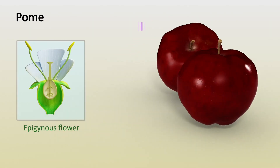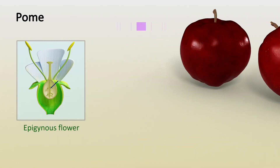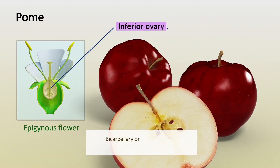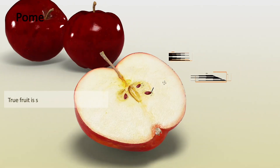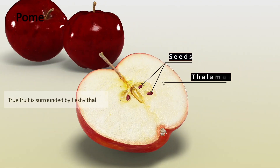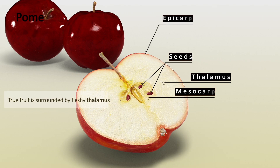Pome: Pome develops from a bicarpellary or multicarpillary, syncarpous, inferior ovary with axial placentation. Pome is a true fruit and is surrounded by fleshy thalamus. In Pome, the epicarp and mesocarp are fleshy and are fused with the fleshy thalamus, but the endocarp is cartilaginous.